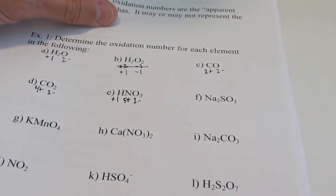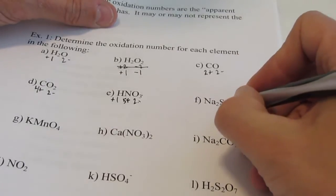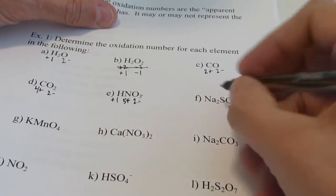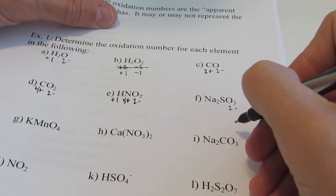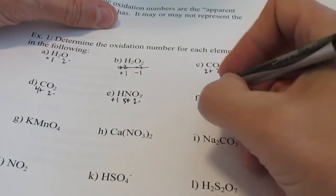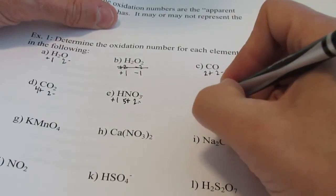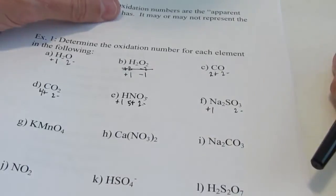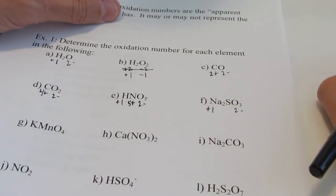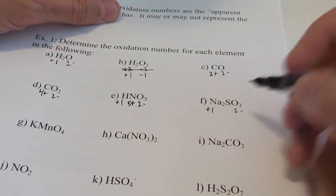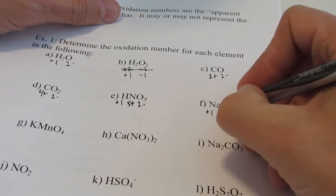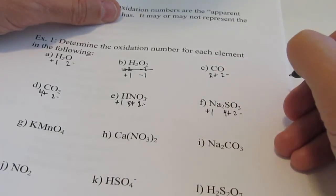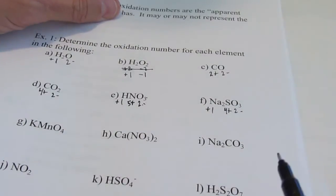Example F: Na2SO3. Oxygen is negative two, giving three oxygens at six negatives total. I'll do sodium next since it's in group 1 and can only be positive one — that gives me two positives against six negatives. The other four positives come from sulfur. Sulfur is in group 16, and it can be up to four positive, so that checks out.